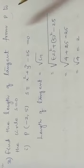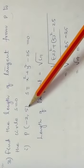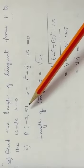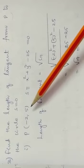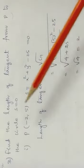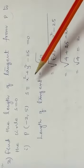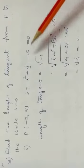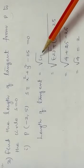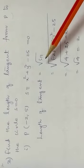P is at minus 2, 5. Circle is x square plus y square minus 25 equal to 0. Length of tangent is root S11. When we discussed position of point, we said root S11.